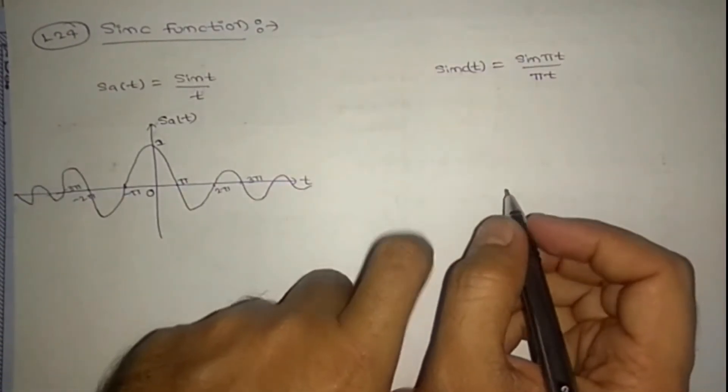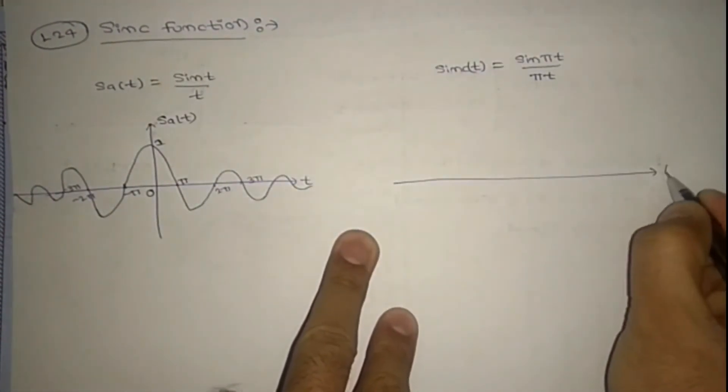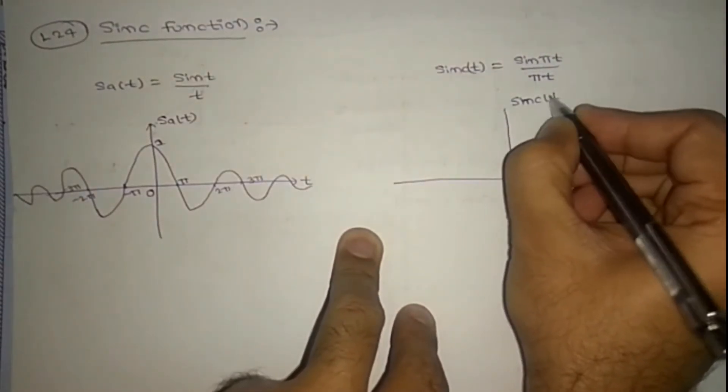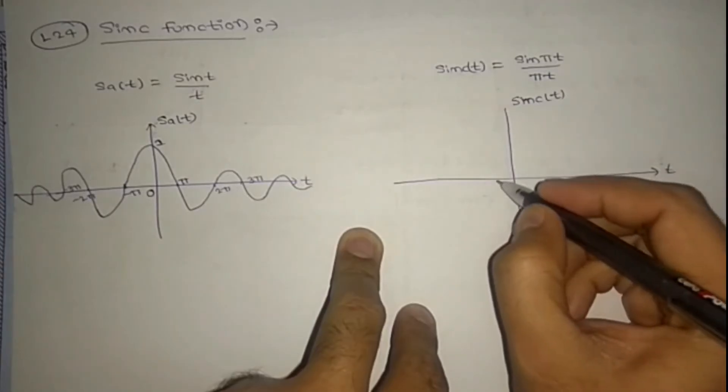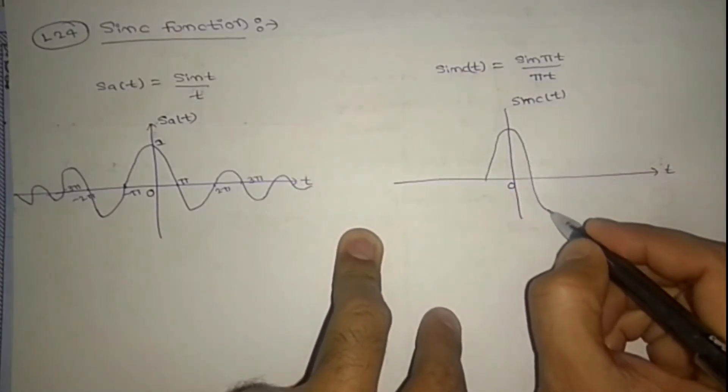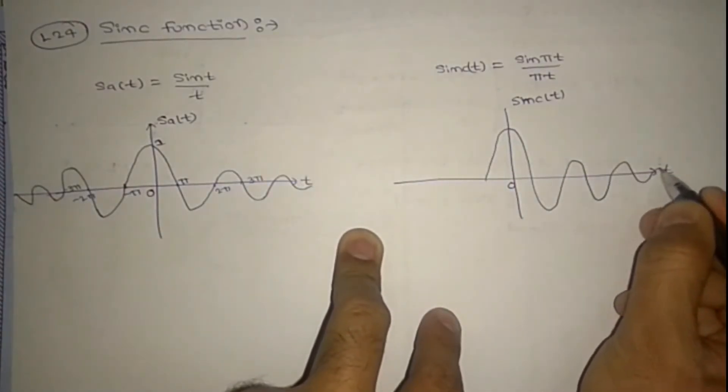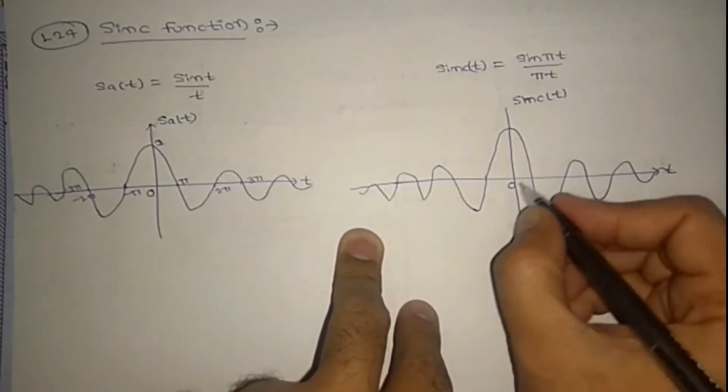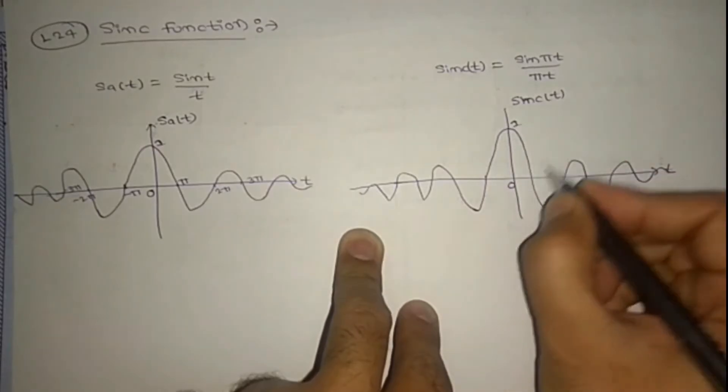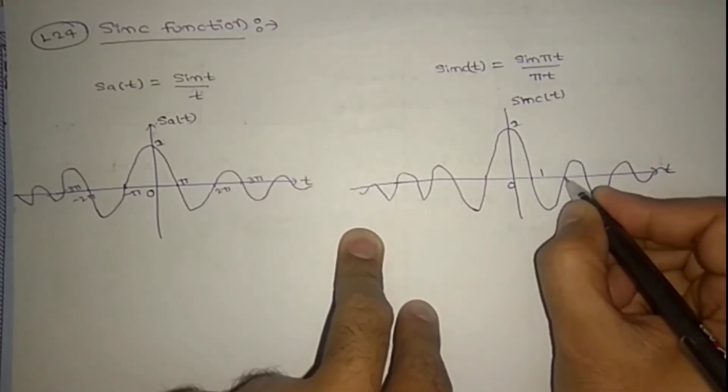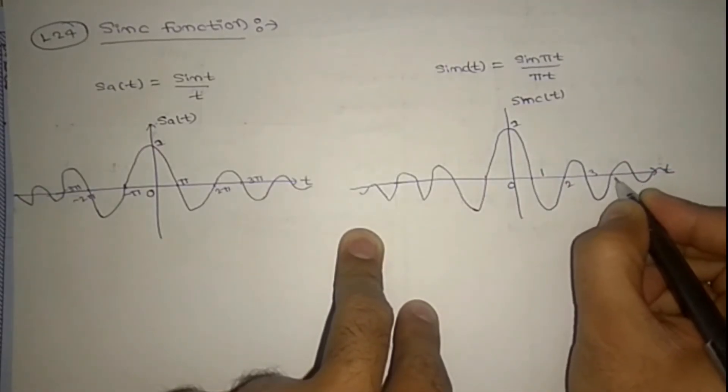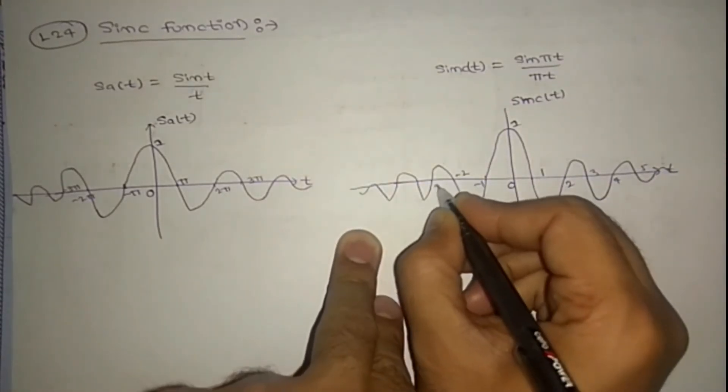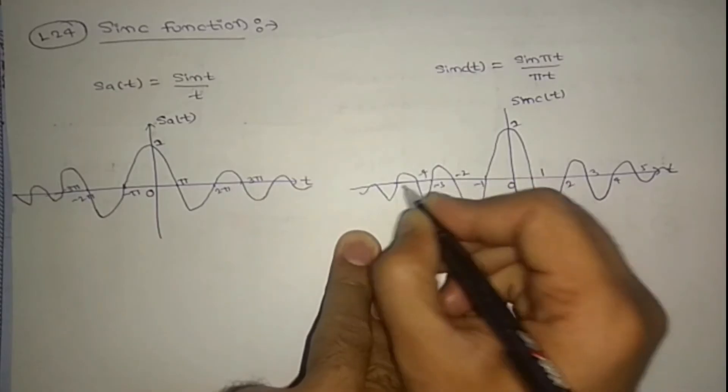But here, we are making normalized this one. This is sinc of t. So this will be, amplitude is keep on reducing. Here it is one, and here it will have 1, 2, 3, 4, 5, here minus 1, minus 2, minus 3, minus 4, minus 5.